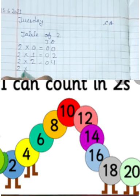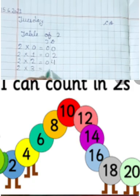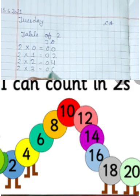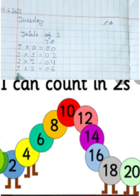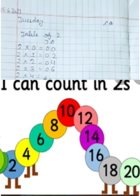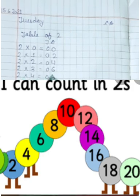Two ko hum three times likhenge, so what will come? Two threes are six. Two ko four times. Two fours are eight.